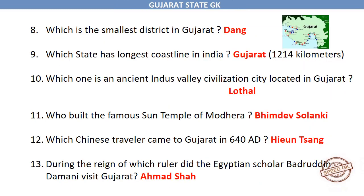Which is the largest district area-wise in Gujarat? Kutch. Which is the smallest district in Gujarat? Dang. Which state has the longest coastline in India? Gujarat, 1,214 km. Which ancient Indus Valley civilization city is located in Gujarat? Lothal.